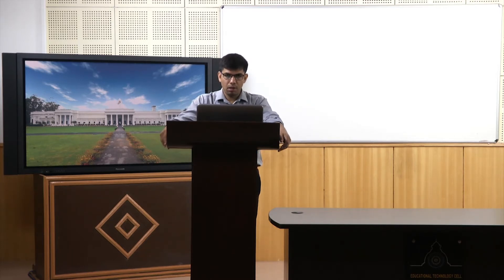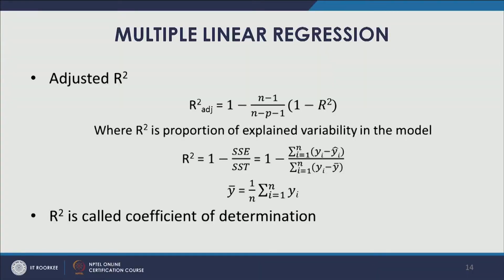R-squared can be computed as follows: 1 minus SSE divided by SST, where SSE is the sum of squares of errors and SST is the total sum of squares. You can also express this as 1 minus the summation over i=1 to N of (Yi minus Ŷi) squared, divided by the summation of (Yi minus Ȳ) squared. In this fashion you can also compute the R-squared value. R-squared is mainly used to check the goodness of fit.